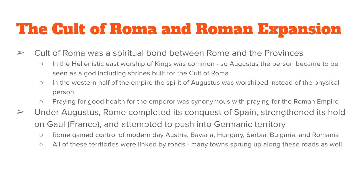It was under Augustus that the Roman Empire reached its largest size. It conquered Spain, increased its connection to Gaul, invaded Britain and Germany, and much of modern-day Europe came under Roman control while Augustus was emperor.